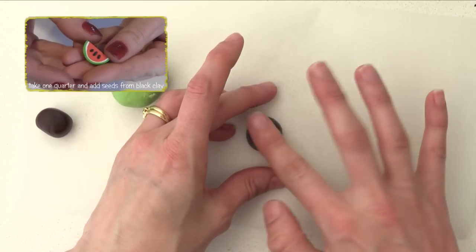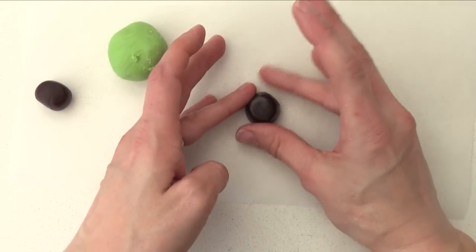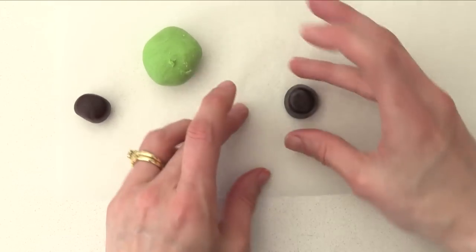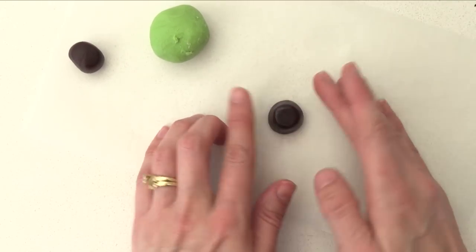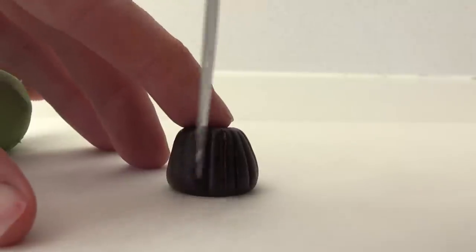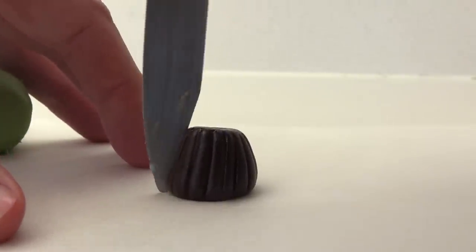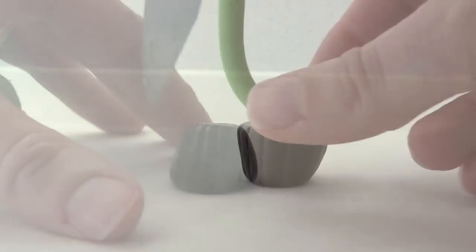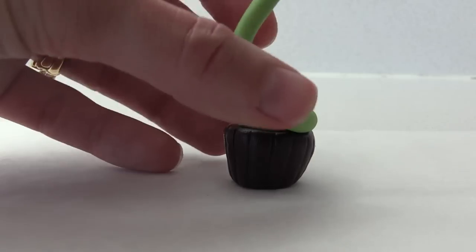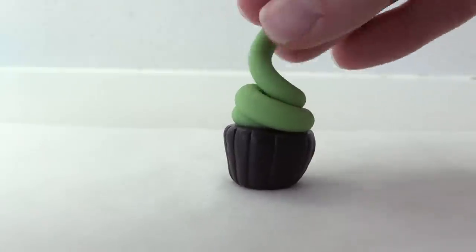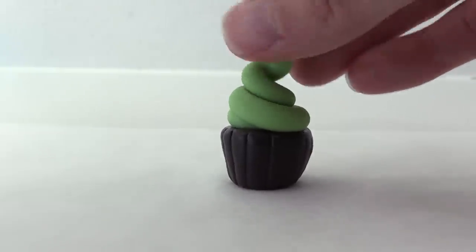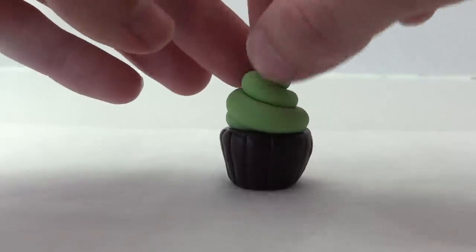Her logo is a cupcake. To make it, just roll out some brown fondant into a ball and then roll it to make it narrower at one end. Squash it down flatter until you get a cupcake case shape and then use a knife to make indents all the way around the case. Take your green fondant and roll a long snake and then starting at the center, swirl it around and around until you get to the top and then just twist it off to give a nice piped look.